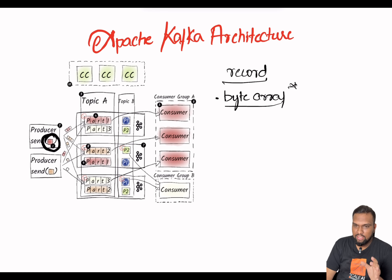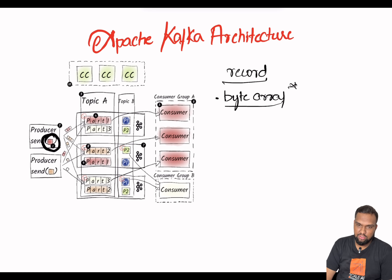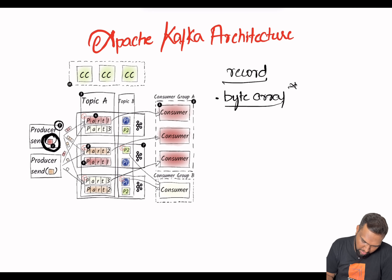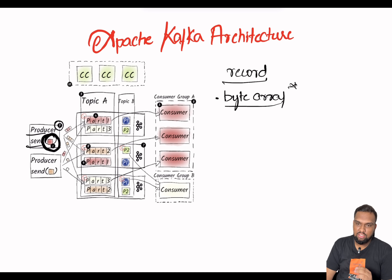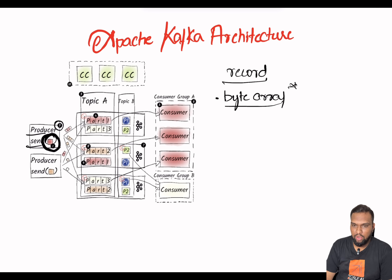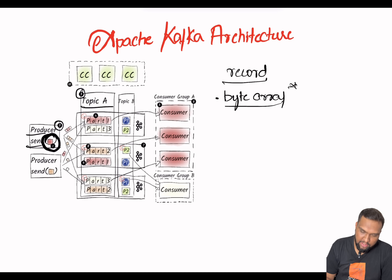Now, who is responsible for sending these messages? Marked as number two on the diagram, producers send messages to the leader of the partition and select the partition themselves with the help of a partitioner within the topic.